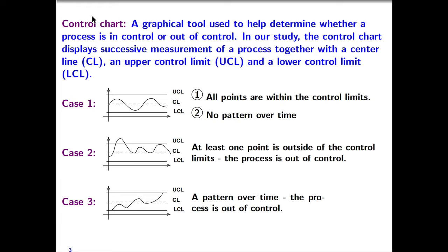Now, let's answer the question of what is a control chart. A control chart is a graphical tool used to help us determine whether a process is in control or out of control. In our study, the control chart displays consecutive measurements of a process together with a centerline (CL), an upper control limit (UCL), and a lower control limit (LCL).